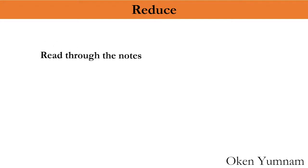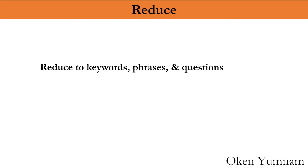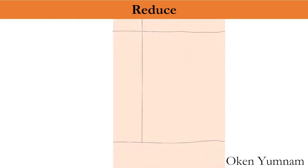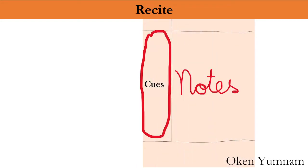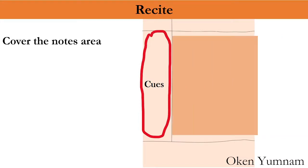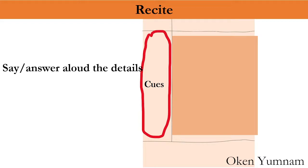After the class, we have to read through the notes and then reduce to keywords, phrases, and questions. Suppose this is the page where you have taken the notes. This area here is where you have to write the keywords or questions. Now coming to recite: you have the cues apart from the notes. What you have to do is cover the notes area. Now look at the cues and then say aloud the details regarding the cues, and check if it is correct or not by removing the cover.